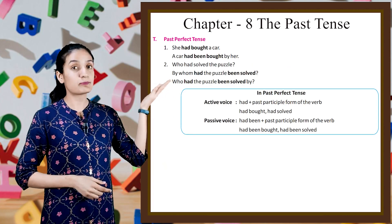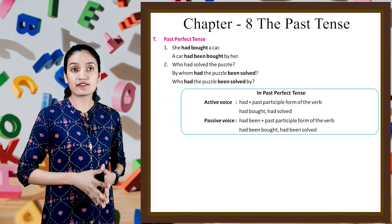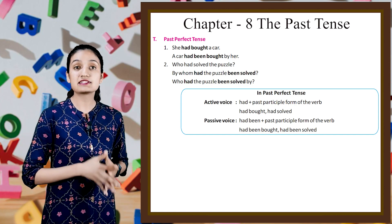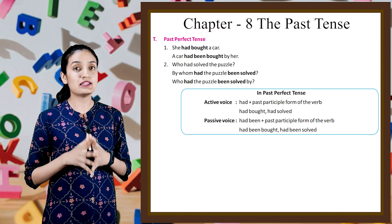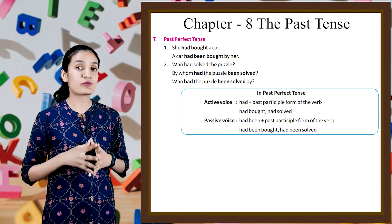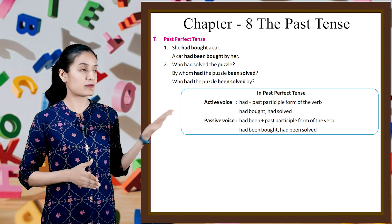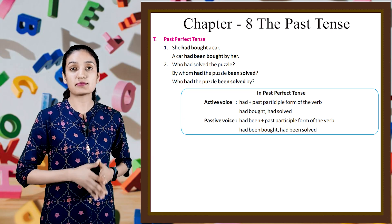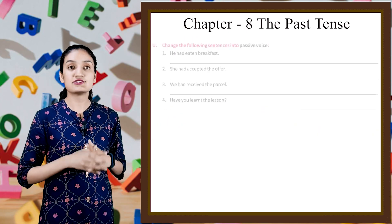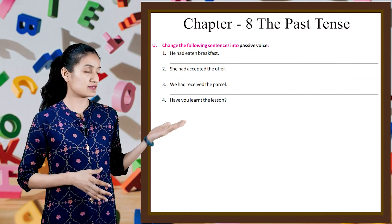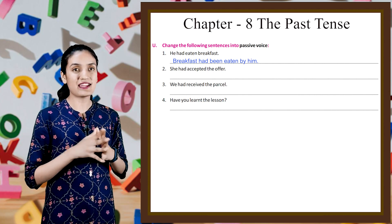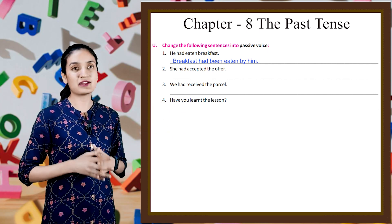Next part is past perfect tense. 'She had bought a car' — 'A car had been bought by her.' 'Who had solved the puzzle?' — 'By whom had the puzzle been solved?', or 'Who had the puzzle been solved by?' In past perfect tense, active voice uses had plus past participle — had bought, had solved. Passive voice uses had been plus past participle — had been bought, had been solved. Example: 'He had eaten breakfast' becomes 'Breakfast had been eaten by him.' Do the rest by yourself.